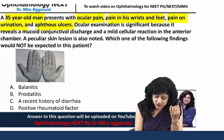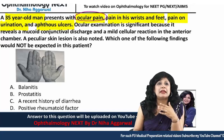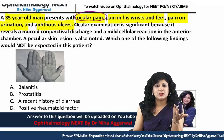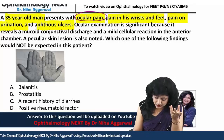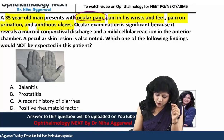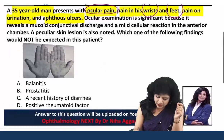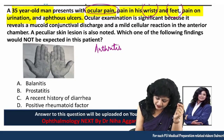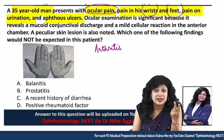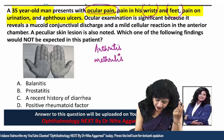If we start interpreting: we have ocular pain — this could be glaucoma or uveitis, something like that. Along with this, we have pain in the wrist as well as feet, which gives evidence of arthritis.